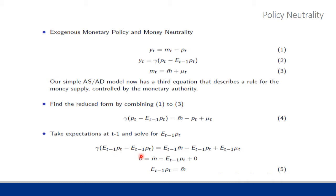EP_T minus EP_T is equal to zero. We know that the expectation of M-bar is just M-bar because it's a constant. The expectation of P_T we can leave alone, but the expectation of mu_T — the expectation of the shock — is just zero, because we specify it that way. This simplifies to a solution for the expected price: EP_T is equal to M-bar.